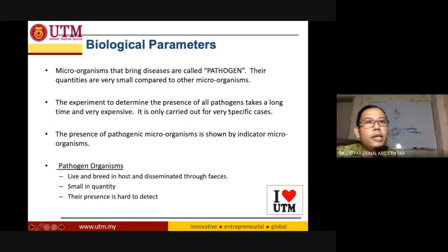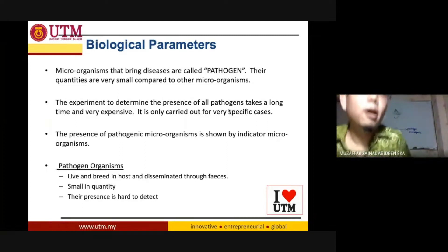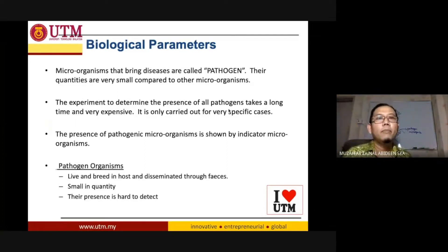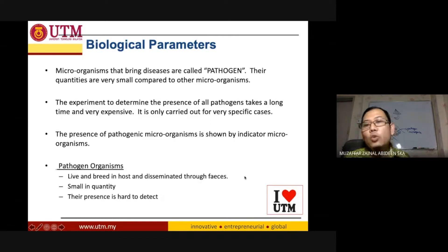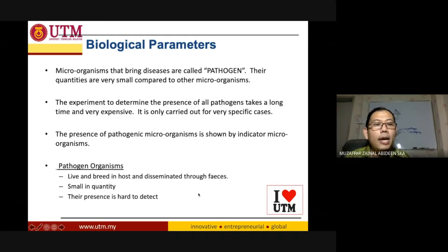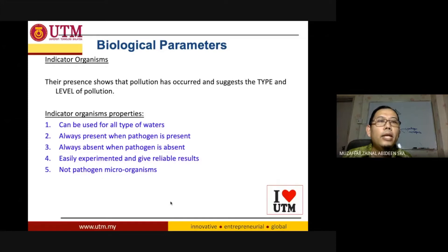A microorganism that causes disease is called a pathogen. The characteristics of pathogens are that they live and breed in a host, are disseminated through feces, and are present in very small quantities, making them hard to detect.